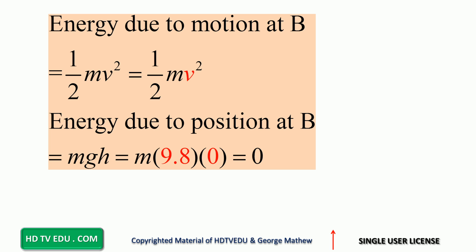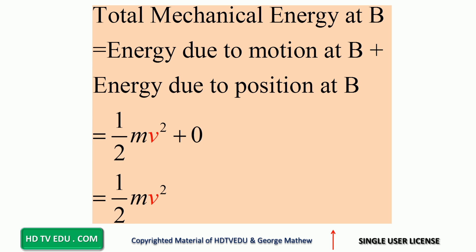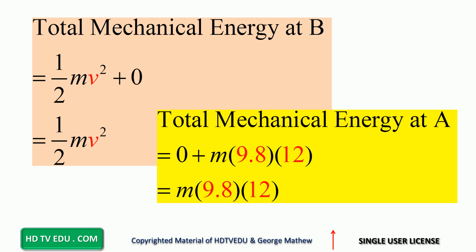At point B, energy due to motion is one half mv squared — the object is definitely moving, so we do have kinetic energy at point B. But we are at the zero level, so potential energy is zero. Total mechanical energy at B equals one half mv squared plus zero, which is one half mv squared.